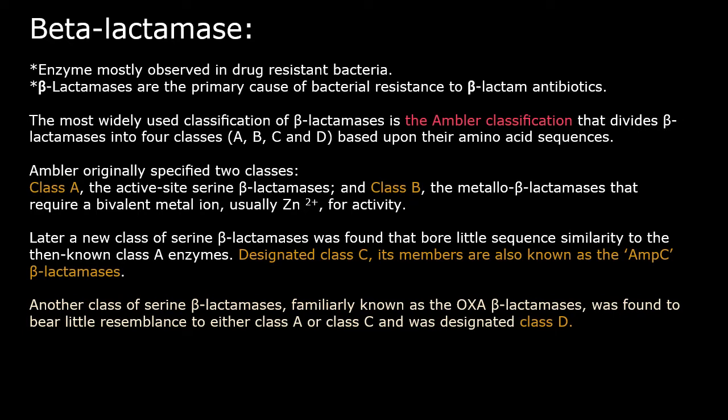Originally there were two classes, A and B. Class A is for active site serine beta-lactamases, meaning serine is highly active in the reaction conferring resistance. In the case of class B, that is metallo-beta-lactamases, they require bivalent metal ions for their activity — usually Zn2+.